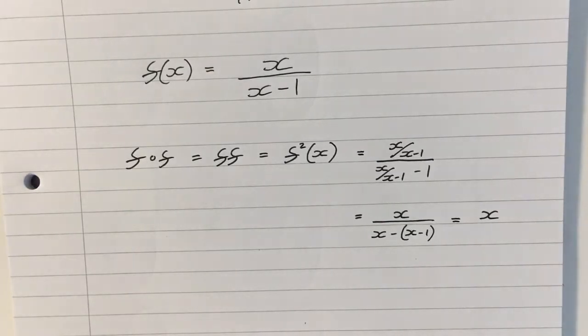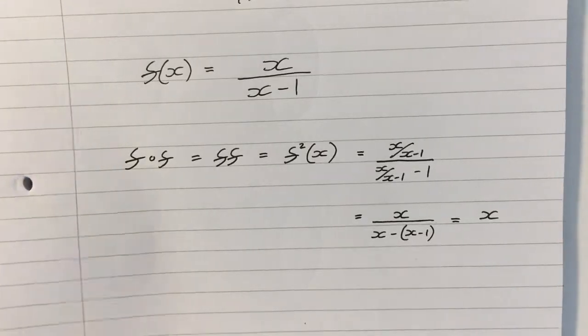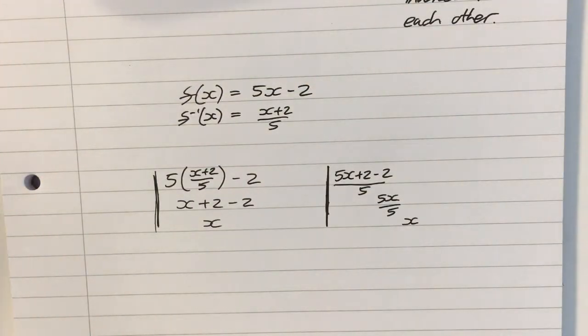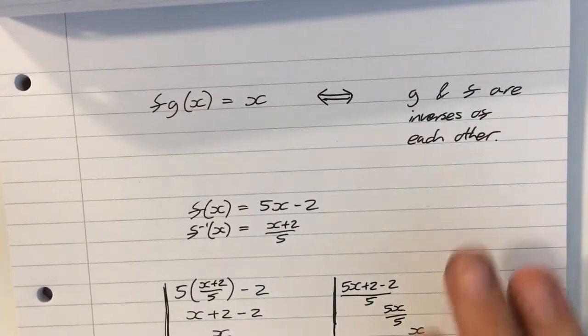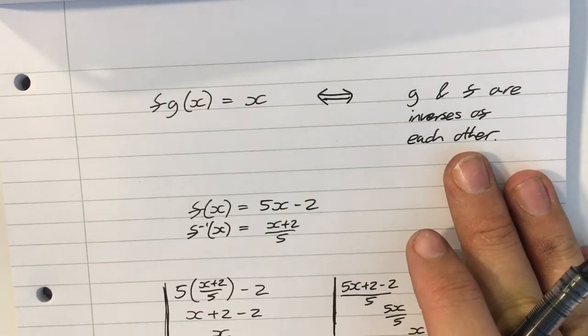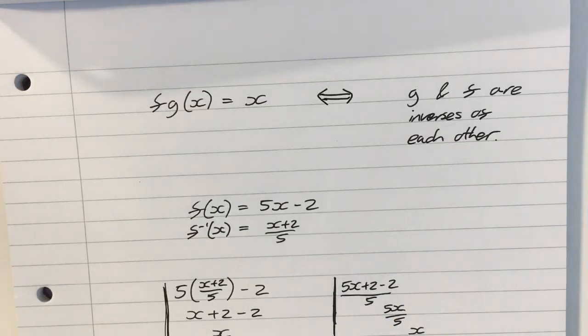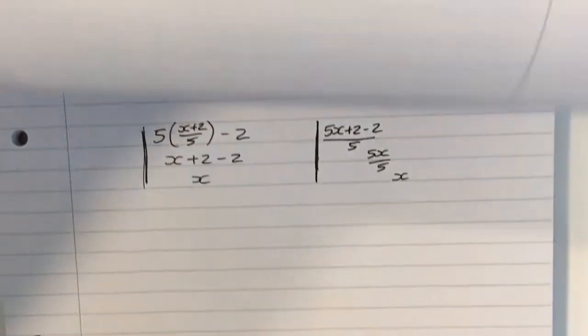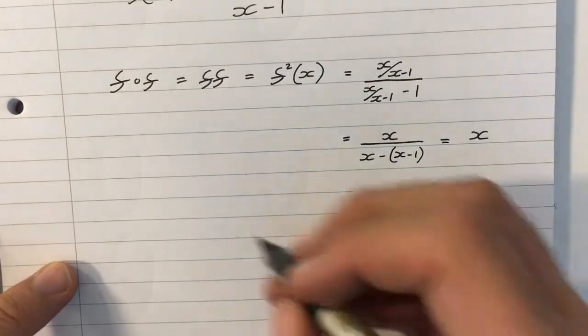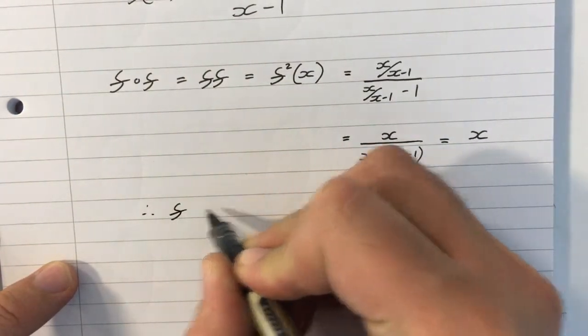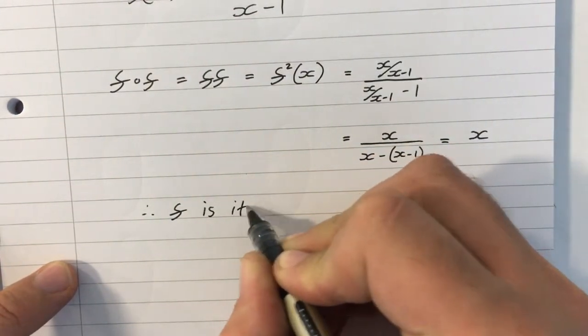So in this situation, I have just composited a function with itself and got x. And by the previous page, that means that f and f are inverses of each other. So f is its own inverse.